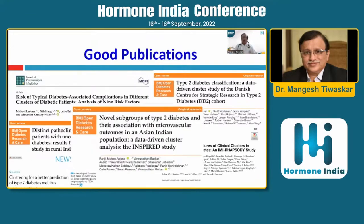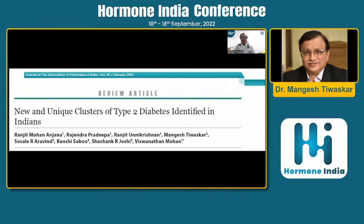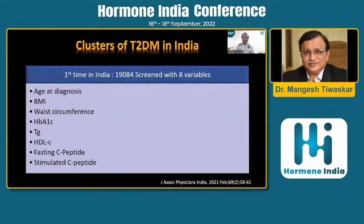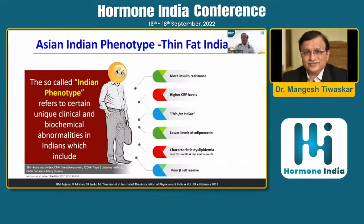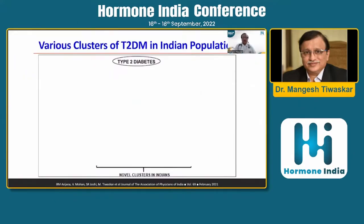There are a good number of publications on this topic. One important study I want to mention is the INSPIRED study, published by Dr. R.M. Anjana and team, which identifies clusters of type 2 diabetes in Indian patients. I was also part of the same team reviewing new and unique clusters of type 2 diabetes identified especially in Indians. We looked at eight parameters: age of onset, BMI, waist-hip circumference, glycemic control, dyslipidemia pattern, and fasting and stimulated C-peptide levels, analyzing data from nearly 19,000 patients.